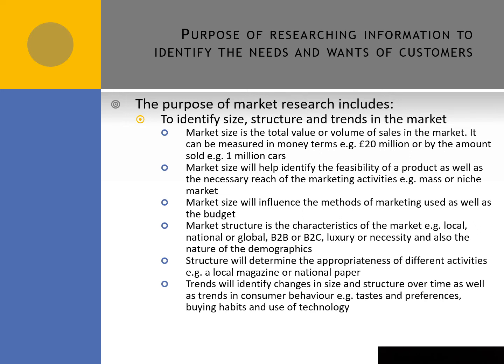Market structure refers to the characteristics of the market — for example, is it local, national, or global? Is it business-to-business or business-to-consumer? Is it a luxury or a necessity, and what is the nature of the demographics? The structure will then determine the appropriateness of different activities. For example, is it more appropriate to use a local magazine to advertise a local café or a national paper? In this case, of course, it would be the local magazine.